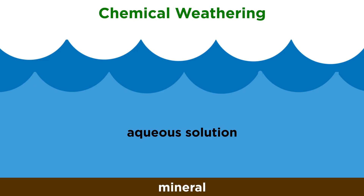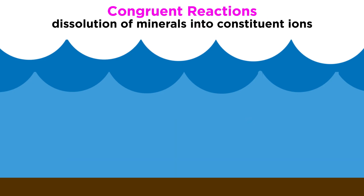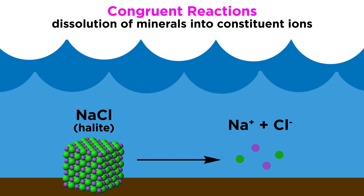Chemical weathering almost exclusively involves reactions between minerals and natural aqueous solutions. There are two types of chemical weathering reactions: congruent and incongruent. Congruent reactions are the simple dissolution of minerals into their constituent ions. Take for example the dissolution of halite, or sodium chloride, which breaks down into Na+ and Cl- in water.